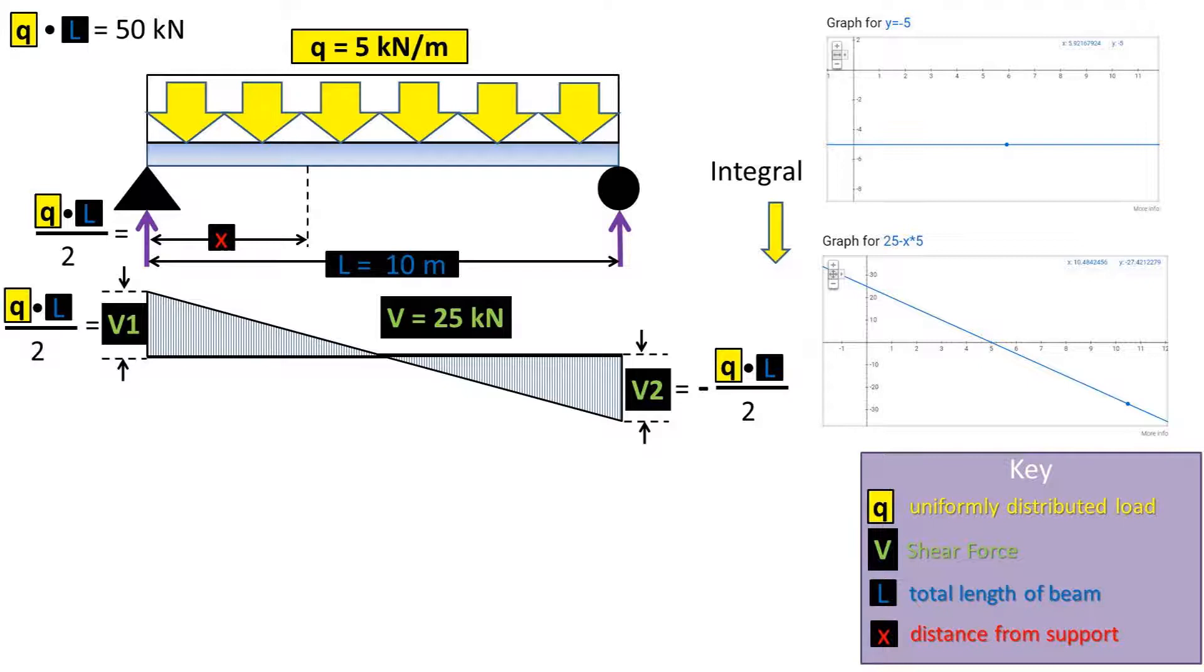Notice that this graph is the integral of y equals negative 5, which is y equals negative 5x plus c. Our c, or constant, being the shear force from the leftmost support, which is 25 kilonewtons. We use the constant rule in calculus to integrate.